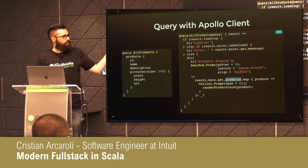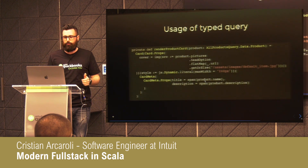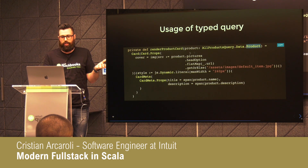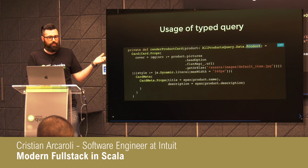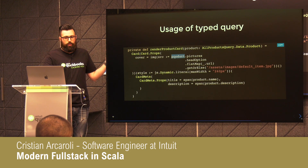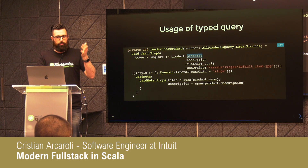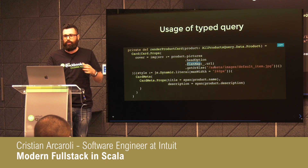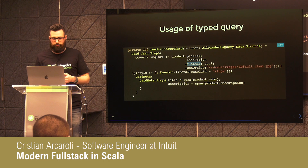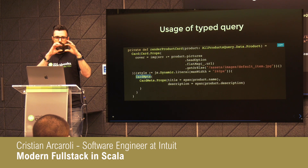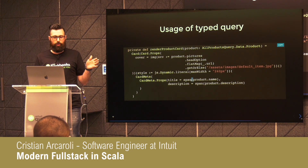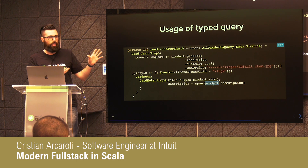In the render product card function, we deal with the product as case classes. For example, we get the product, get the picture from the product, take the first one, take the URL, and if it's not there use a default one — the old one you saw before. In the card footer — the lower white part — we take the product name, take the product description, and put it there.